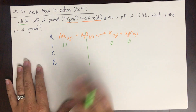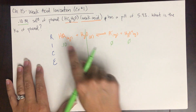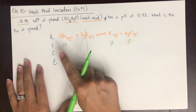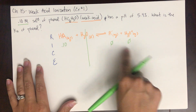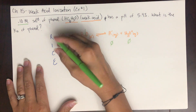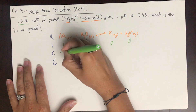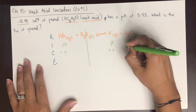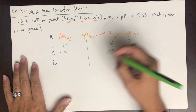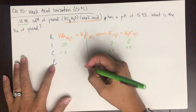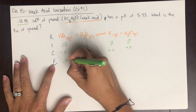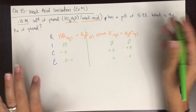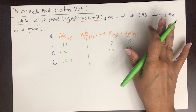Now, just like everything else, you pay attention to the stoichiometry to determine the change row. Reactants are always decreasing, so that's minus x. Products are always increasing, so that's plus x and plus x. Bringing everything down to the equilibrium row: 0.10 minus x, x, and x.